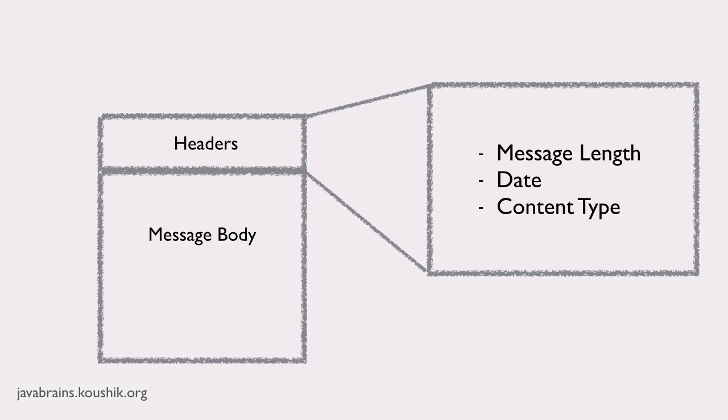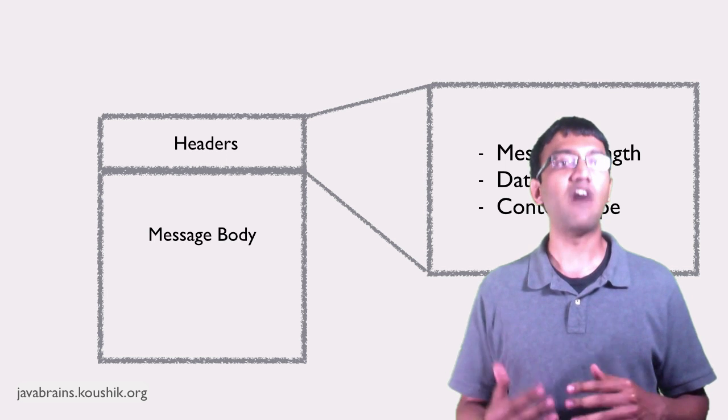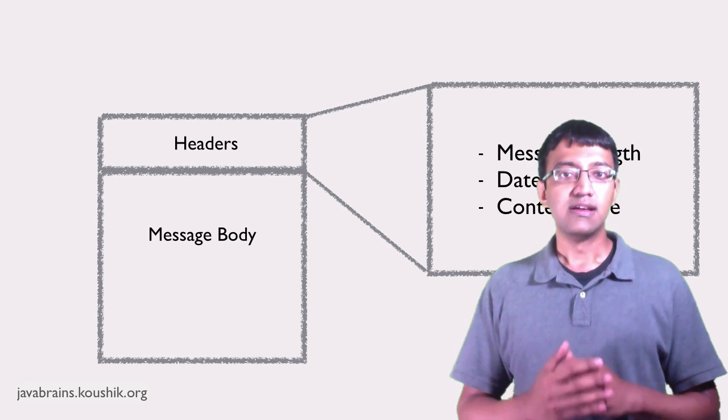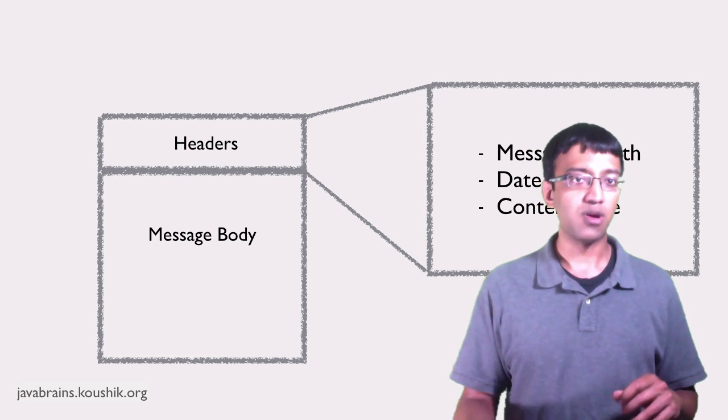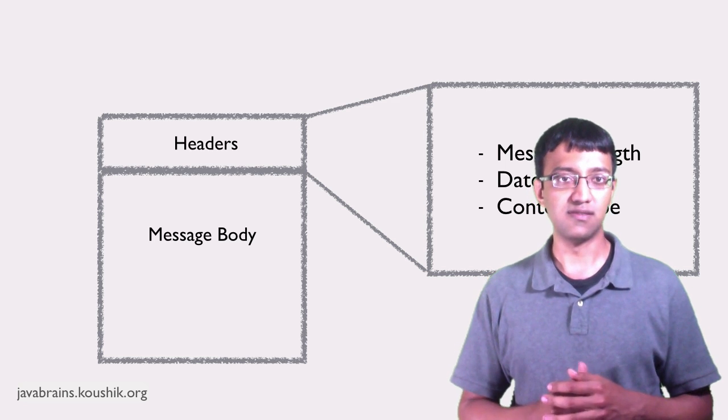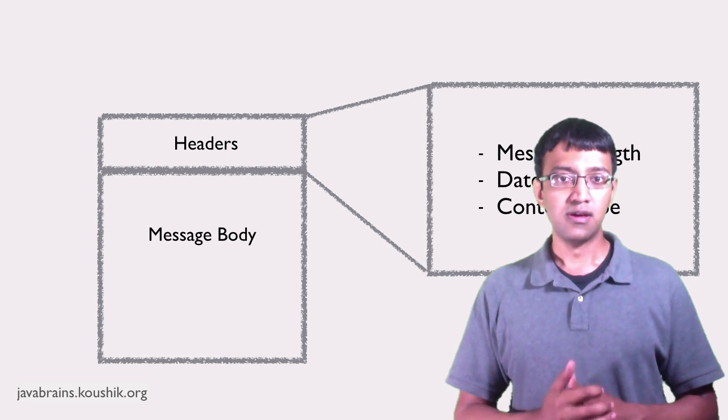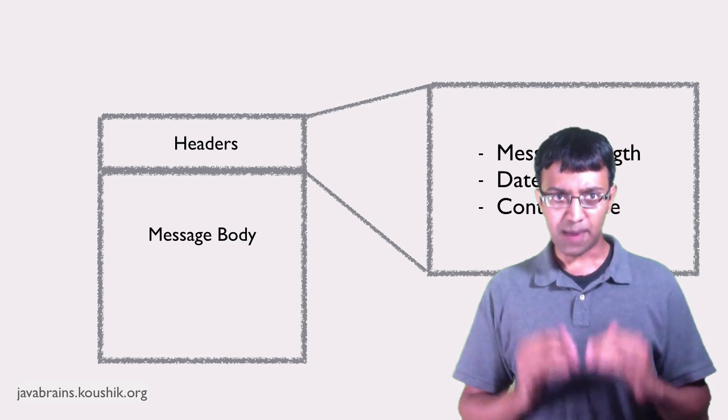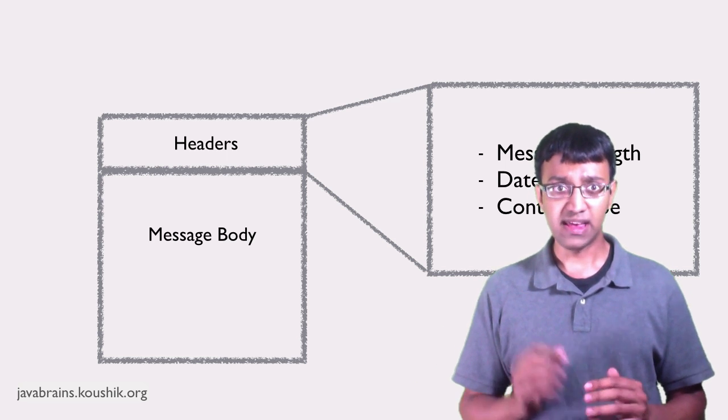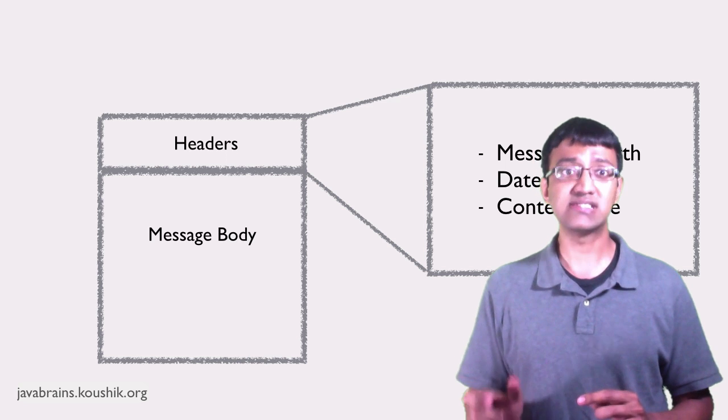One such possible header is called the content type. The response could contain a content type header value with the value being JSON or XML, which basically details what the format of the message is. There are special values for JSON or XML and we'll learn more about how to implement this when we actually write code. But know that the type of content being sent back is an information that's available in the header.